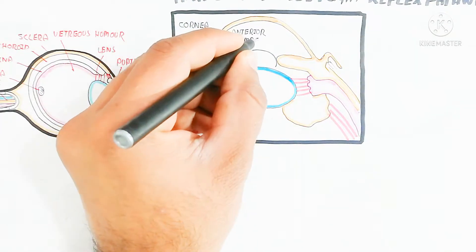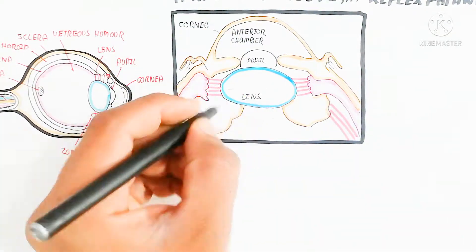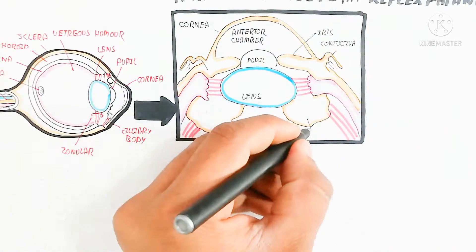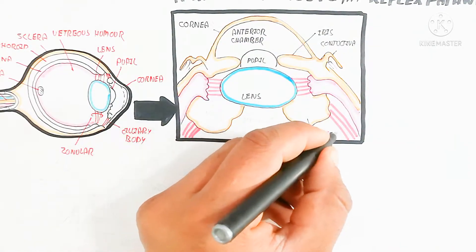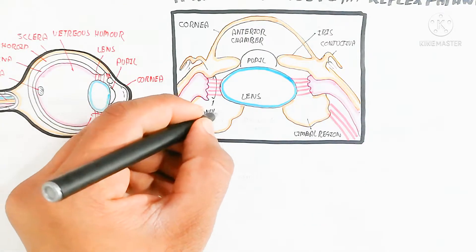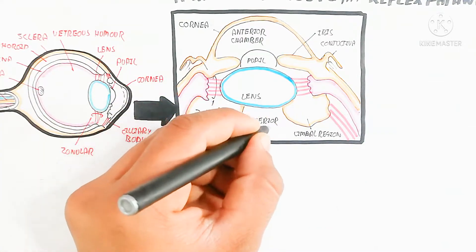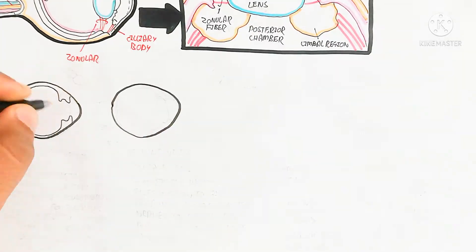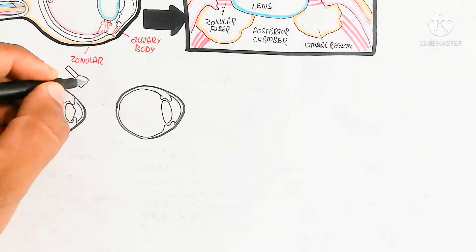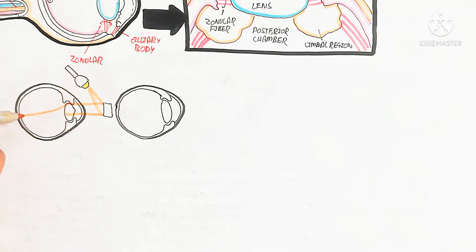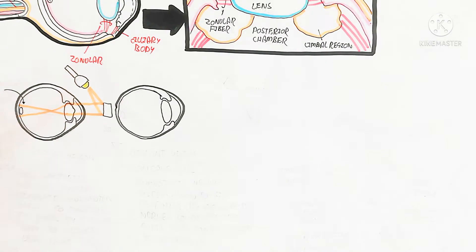Here I am drawing a bigger picture — zooming out. Here is the cornea, the anterior chamber, and the posterior chamber at the back. This is the iris and the zonular fibers, which connect to the ciliary body. Here is the limbal region, and the iris gives the eye its color. The pupil is used for dilation and constriction for light accommodation.